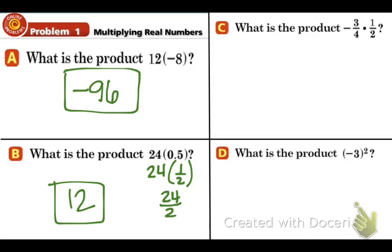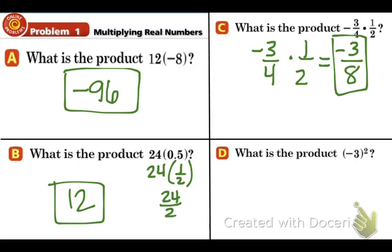In part C, we have a negative and a positive. So that means our answer is going to be negative. And we just need to multiply across. What is negative 3 times 1? Negative 3. What is 4 times 2? 8. And that's our answer, negative 3 eighths. And the last one, the product of negative 3 to the second. So that just means we're doing negative 3 times itself. Well, when we multiply two negatives together, we get a positive. And that's a positive 9 as our answer. So example 1 is done.